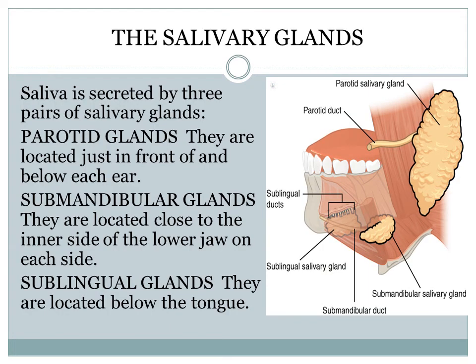Next we come to the salivary glands. Saliva is secreted by three pairs of salivary glands: parotids, submandibular glands, and sublingual glands. The parotid glands are located just in front of and below each ear. The submandibular glands are located close to the inner side of the lower jaw on each side. The sublingual glands are located below the tongue.